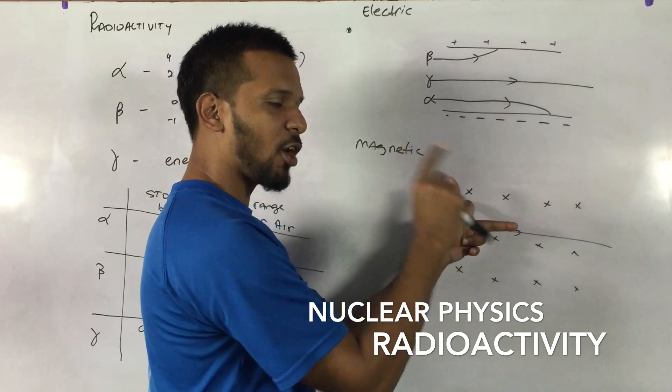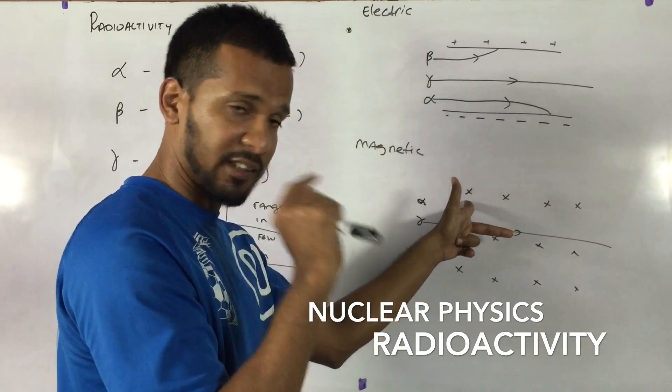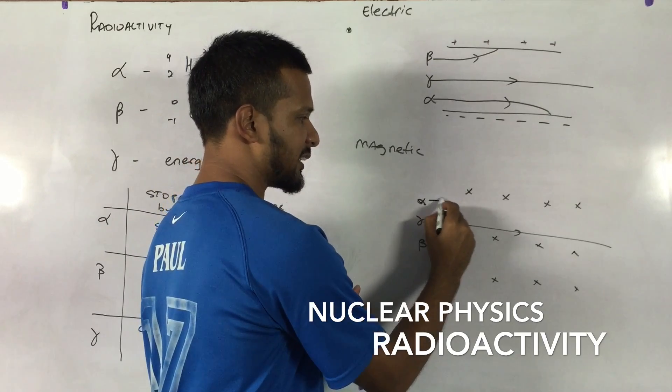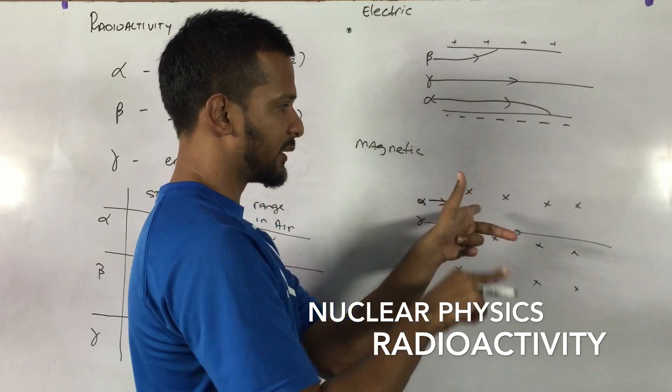This is current direction. And the current direction is conventional. So it shows the direction of a positive charge, which is positive. So this particle is moving in this direction. So what will happen to it?